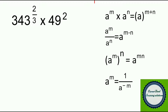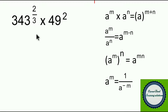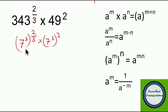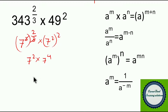Next question: 343^(2/3) × 49^2. Pause the video for 5 to 10 seconds, work it out, then play. Write 343 as 7³, so (7³)^(2/3); and 49 as 7², so (7²)^2. Using the rule (a^m)^n = a^(mn): 7^(3×2/3) = 7^2, and 7^(2×2) = 7^4. Then 7^2 × 7^4 = 7^6. The answer is 7^6.